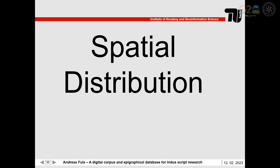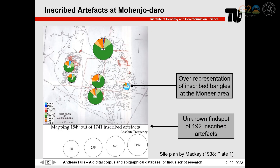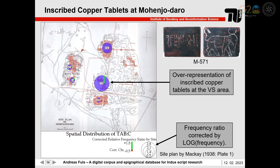In the last part of my talk, I will focus on the spatial distribution of inscribed Indus artifacts. We have already seen that this distribution is very heterogeneous: incised and bas-relief tablets were found mostly at Harappa, square seals at Mohenjo-Daro, and sealings in clay from Lothal and Dholavira. When focusing on Mohenjo-Daro, we can see on the map that square seals occur everywhere, but most inscribed bangles were found in the DKG area. Focusing on inscribed copper tablets from Mohenjo-Daro, this artifact type is overrepresented at the VS area, as indicated by the corrected frequency ratio and chi values.